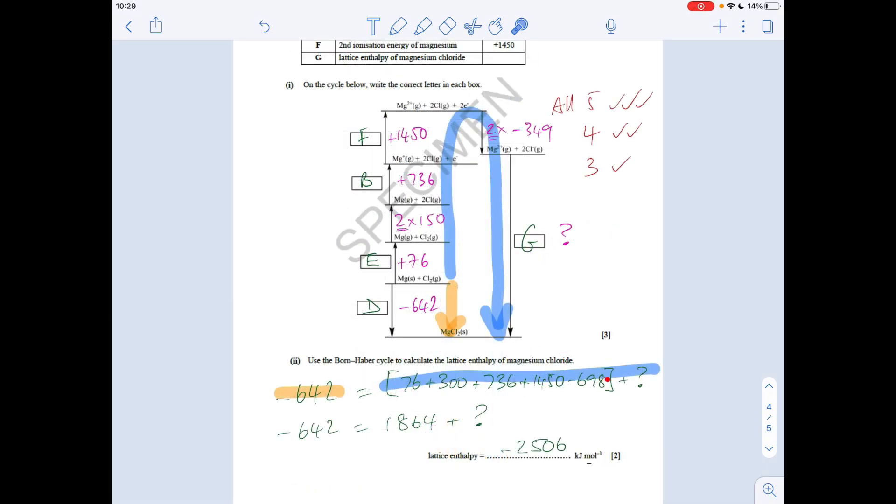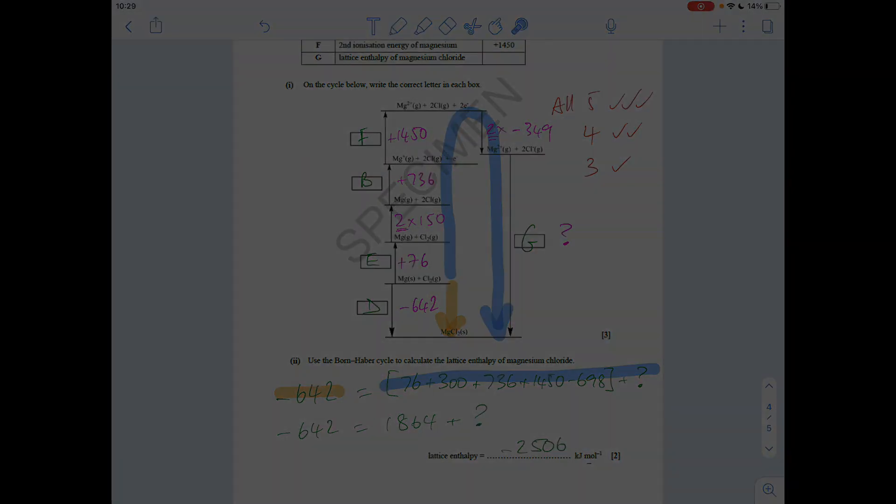Okay, so there's the numbers there. See I've highlighted for the routes. The sum of the bracket is that 1864. So we obviously would just take that over and solve for question mark, which comes out at minus 2506. I'll see you next time.